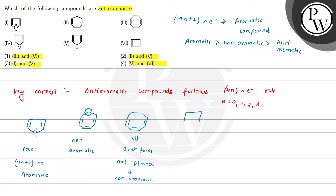The fourth compound has one negative charge and two double bonds. This compound follows the 4n+2 pi electron rule because there are 6 pi electrons present, so this is an aromatic compound.